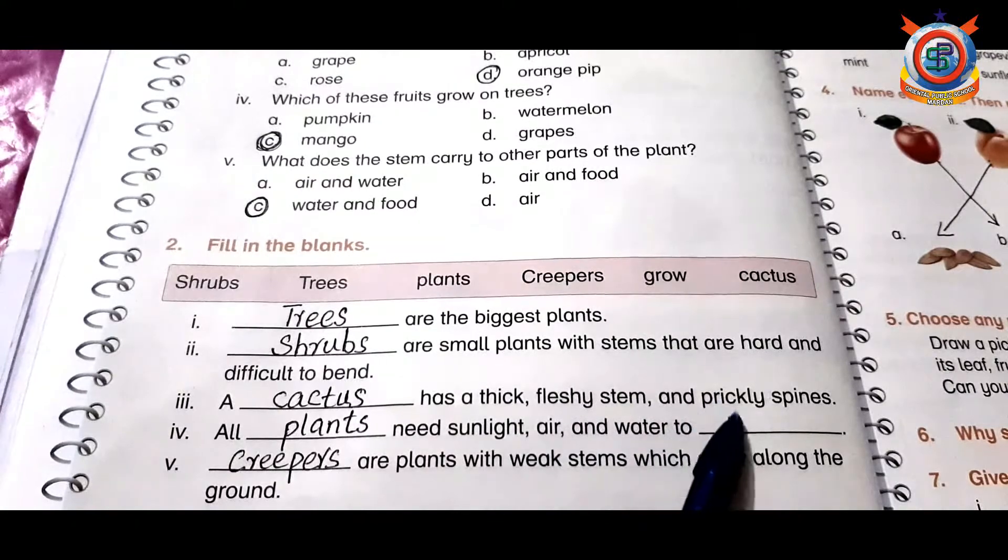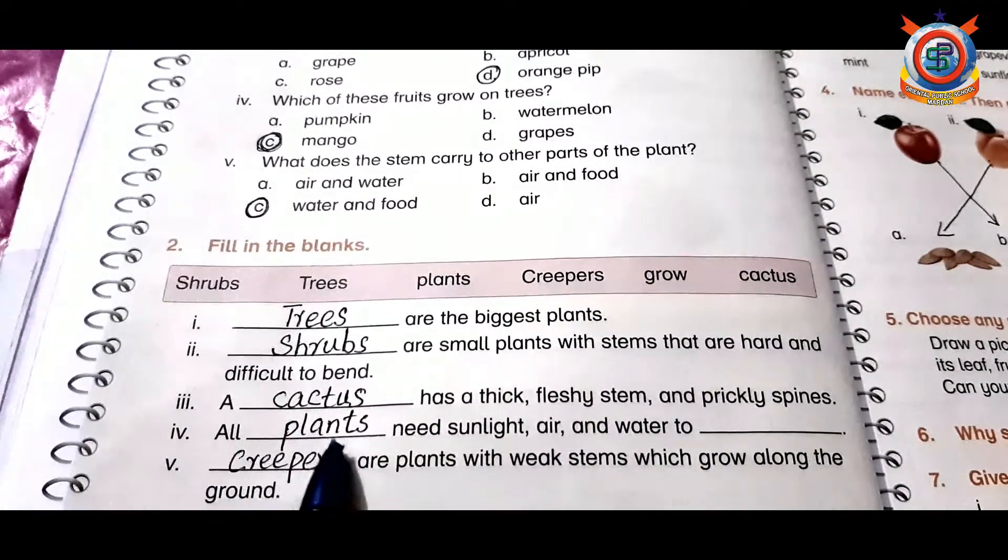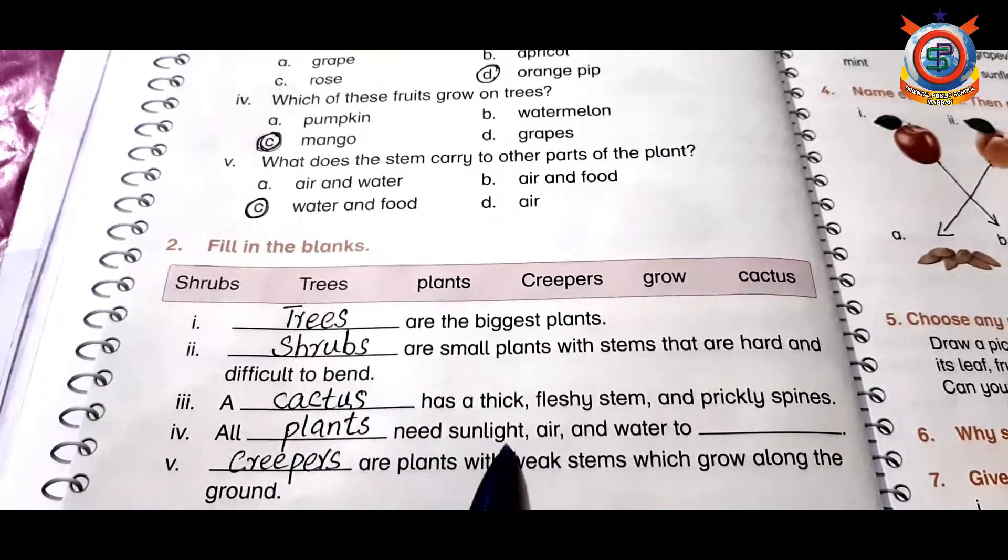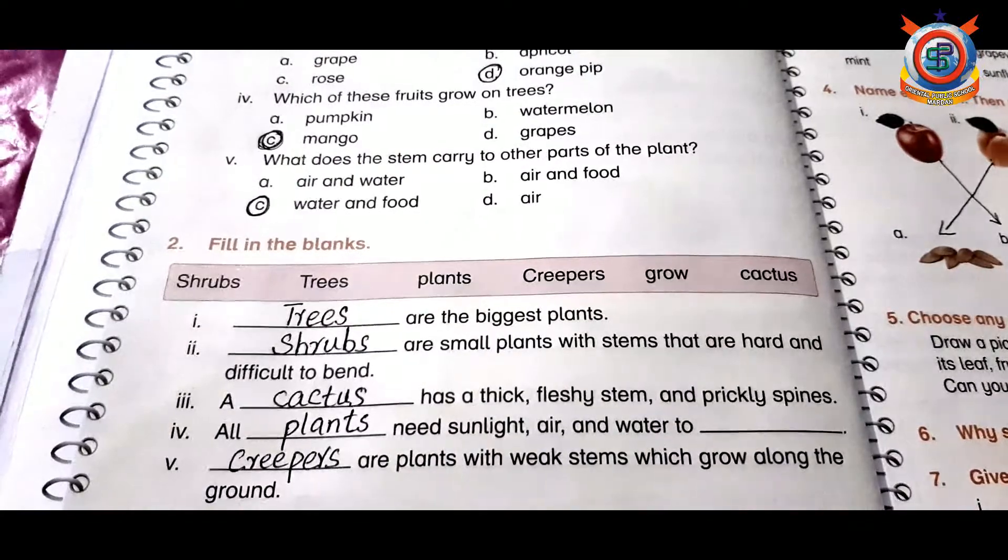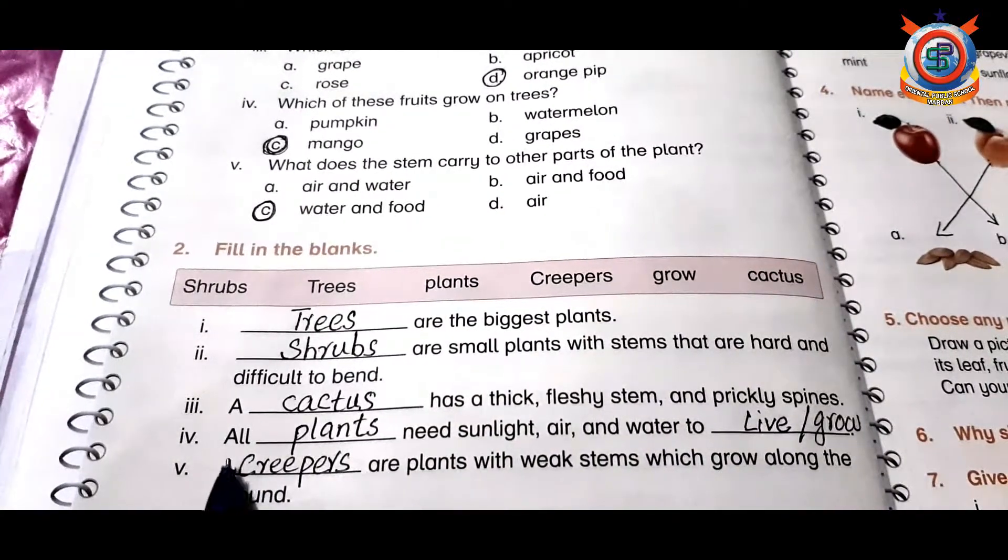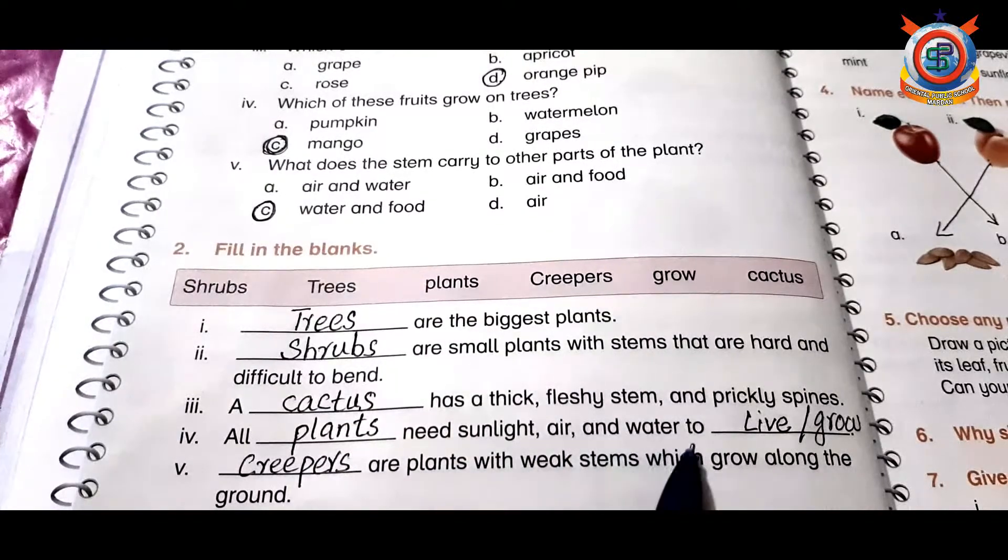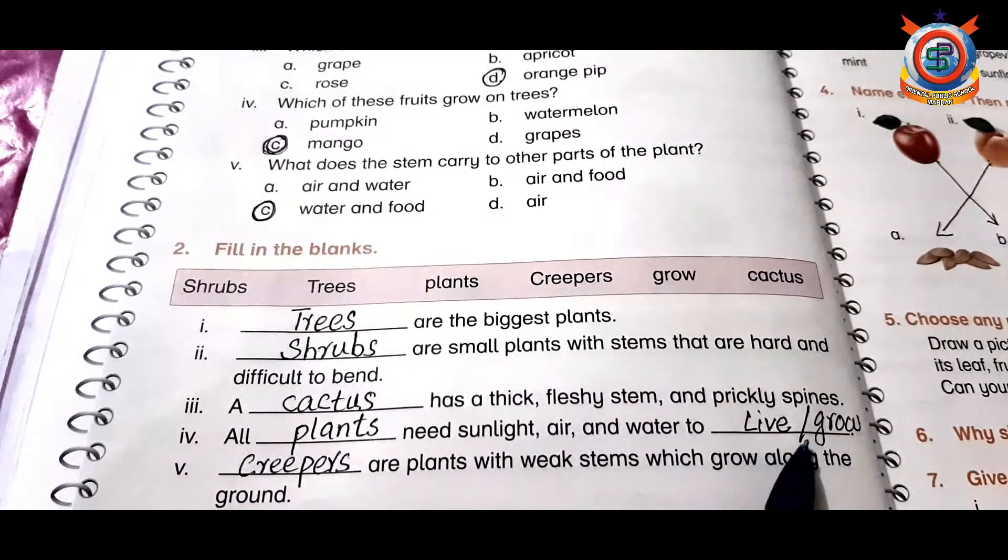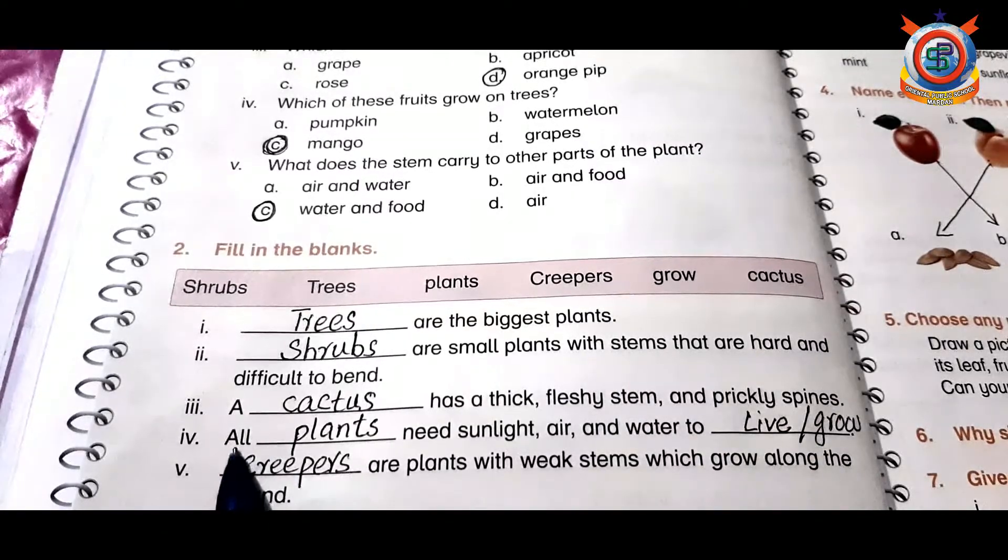Number four: all plants need sunlight, air, and water to live. You can also write grow. If you write all plants need sunlight, air, and water to grow, you are correct.